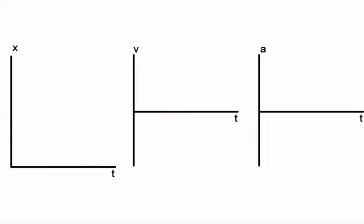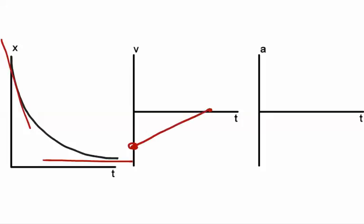Let's try another one. Suppose the position-time graph curves such that the tangent line at the beginning is negative and at the end the slope of the tangent line is zero. So the velocity versus time graph starts negative and ends at zero — a nice linear graph. The slope of that velocity-time graph is positive, so we have a positive constant acceleration.